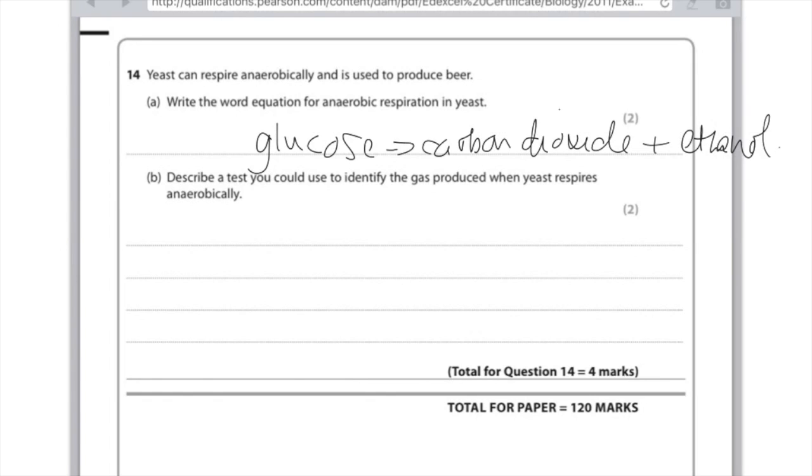Describe a test you could use to identify the gas produced when yeast respires anaerobically. Okay, more of a chemistry answer here, but it's to do with the carbon dioxide. And you want to say that lime water here turns cloudy in the presence of carbon dioxide.